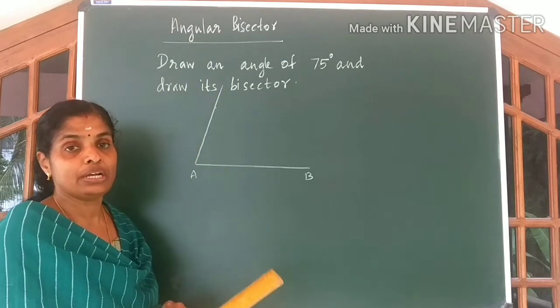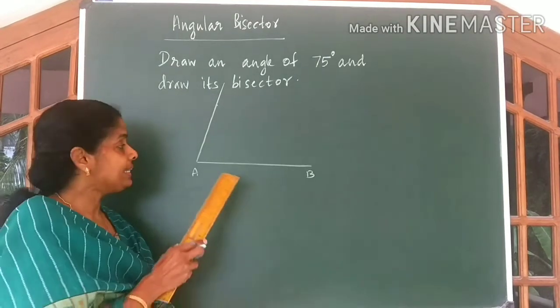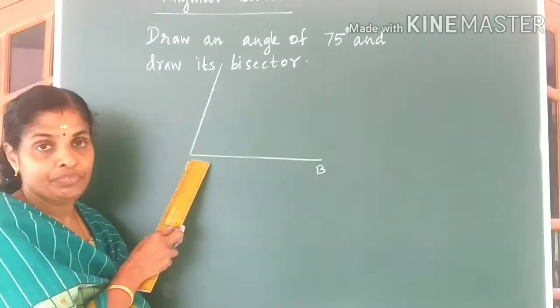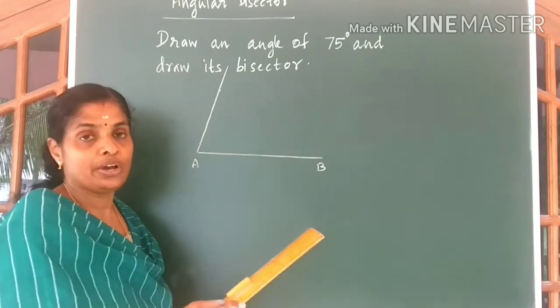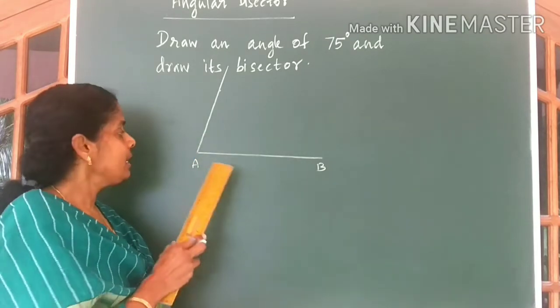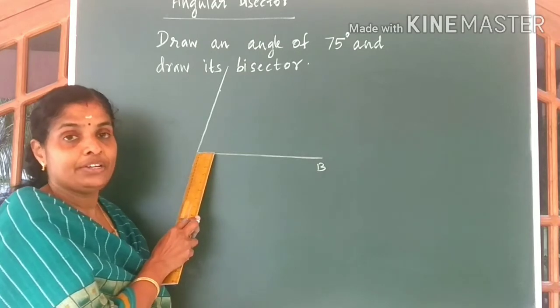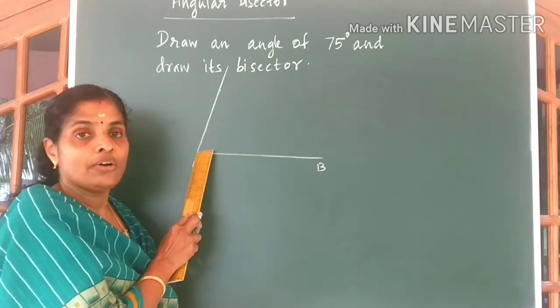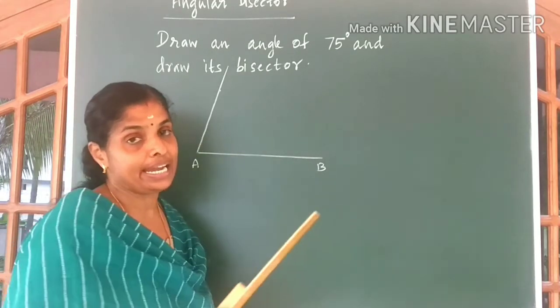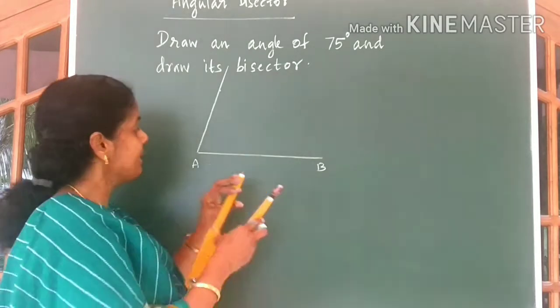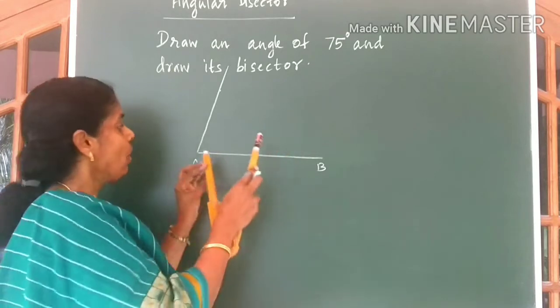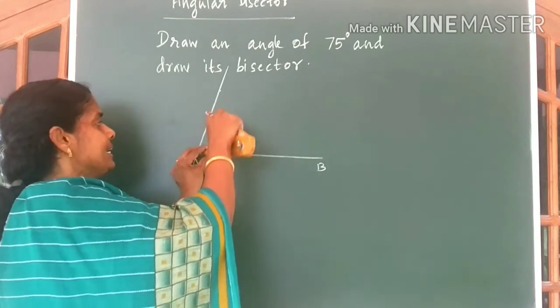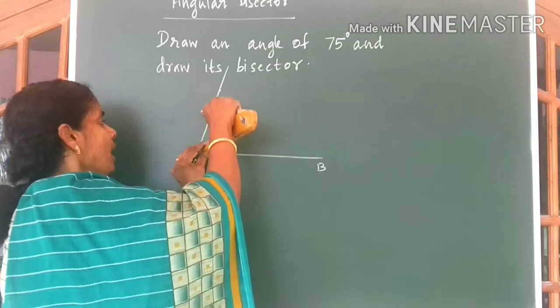Now we are going to draw the bisector at the point A. For drawing the bisector, use your compass. Keep your compass at A and draw an arc of any convenient radius. Using compass, I am going to draw an arc of any convenient radius. So I have drawn an arc.